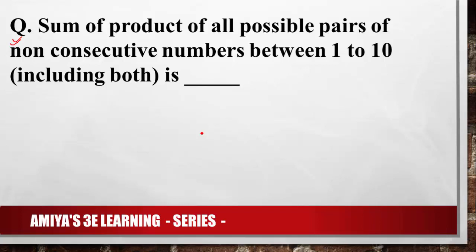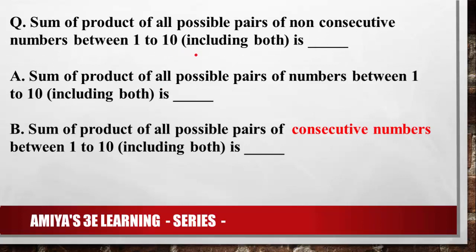I hope you have read the question or at least tried to understand what it is all about. We have to find the sum of product of all possible pairs of non-consecutive numbers between 1 to 10, including both. This question is the main question.